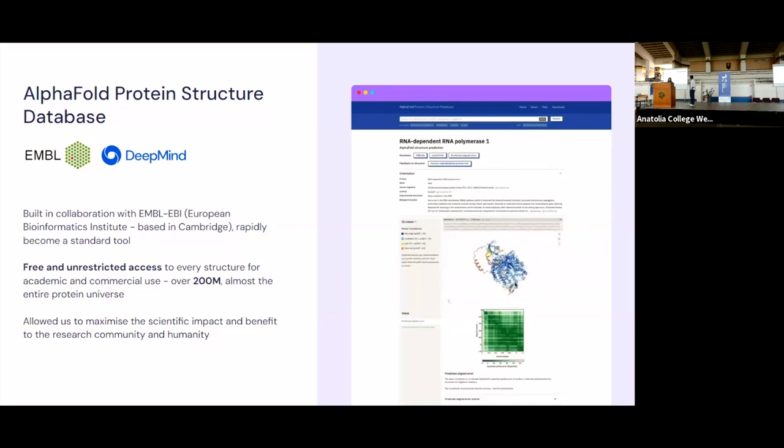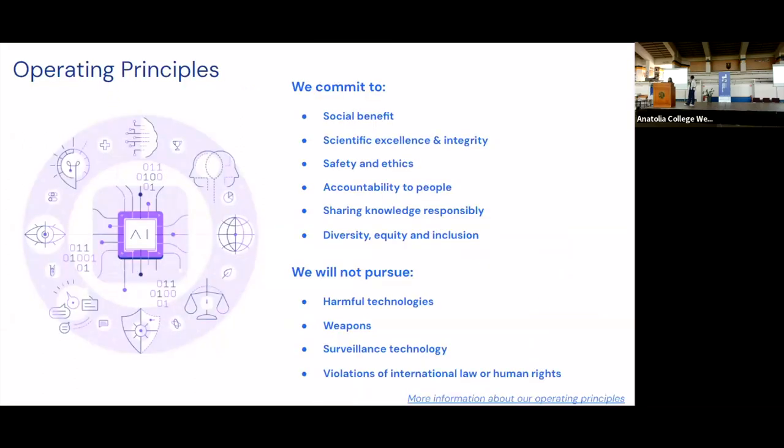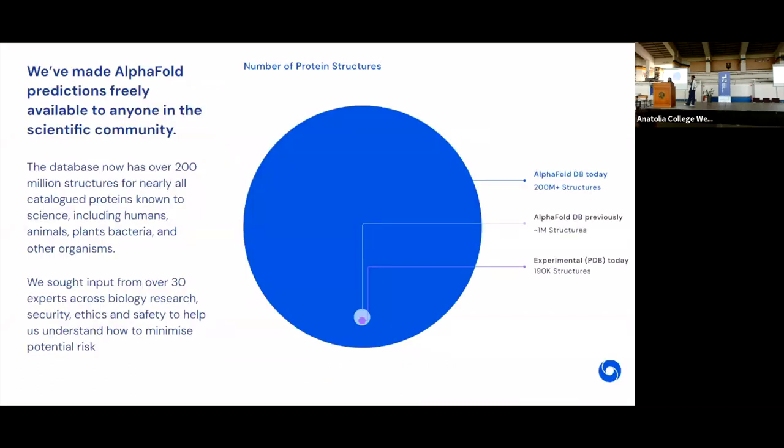One of the other aspects that we think about when planning our paths to impact is thinking about how do we release our AI models responsibly? And so we have a team at Google DeepMind that help us think through how our releases align with our operating principles. So we commit to, for example, enabling social benefit, making sure that we review from a safety and ethics perspective. We make sure that we're accountable for the things that we release. And there are also certain red lines that we won't cross. So for example, we won't pursue harmful technologies, weapons, surveillance technology, or anything that would violate international law or human rights. So in releasing AlphaFold, we actually talked to over 30 different experts from biology, safety, security, ethics, to identify how do we release this treasure trove of information to the community in a safe way and minimize the potential risks.